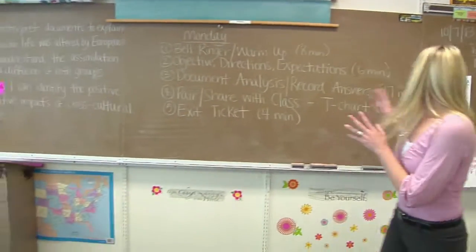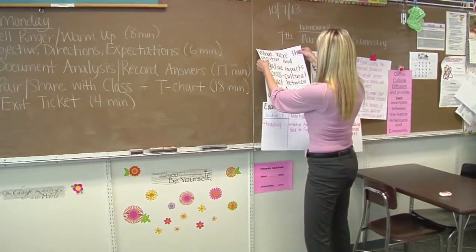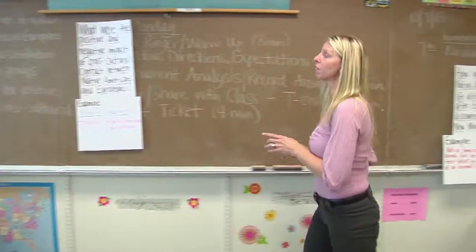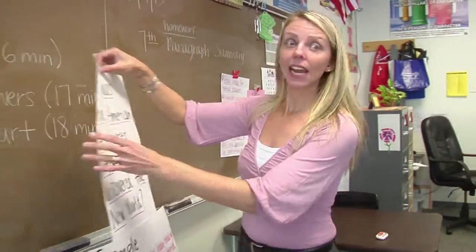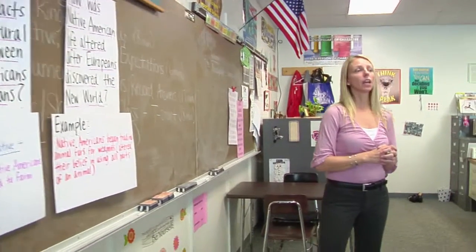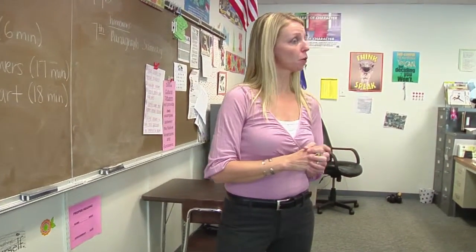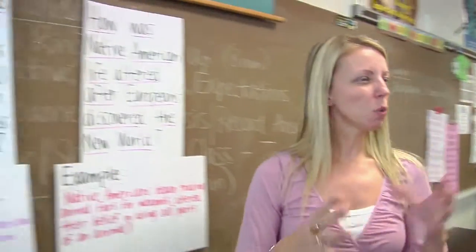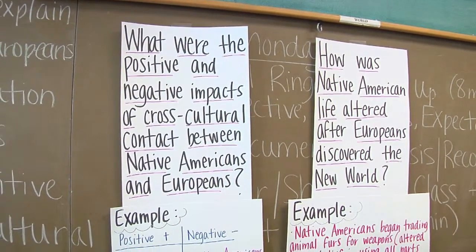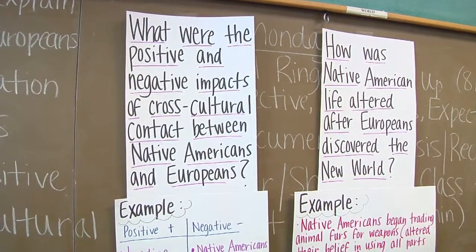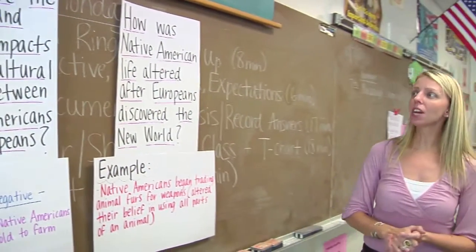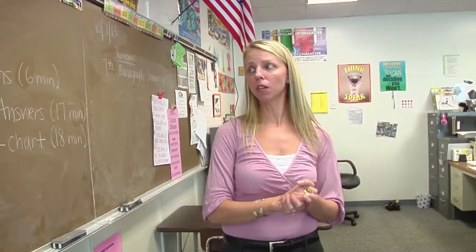So here's what you're going to do. Up here I have two focus questions for you that you are going to be mindful of as you are analyzing two reading passages — fairly short — and a couple of primary source images or photos. Your two focus questions that you really need to look for evidence and closely read for are: what were the positive and negative impacts of cross-cultural contact between Native Americans and Europeans? And, how was Native American life altered after Europeans discovered the New World?